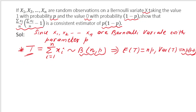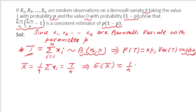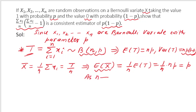X bar is (1/N) summation of Xi, which is T/N. So if I calculate expectation of X bar, this will be (1/N) times expectation of T, which equals (1/N) times N times P, which equals P. As N tends to infinity, expectation of X bar will tend to P — it is independent of N.